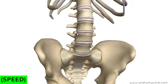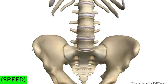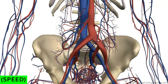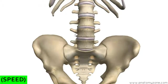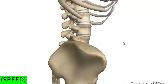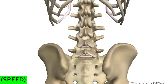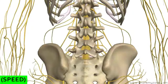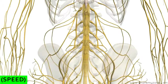You can see the bifurcation of the aorta at the level of L4. The iliac crest is a useful landmark because it marks the point of L4, which is well below the end of the spinal cord. So it's a useful landmark for lumbar punctures — you can see the end of the spinal cord well above the level of the iliac crest.